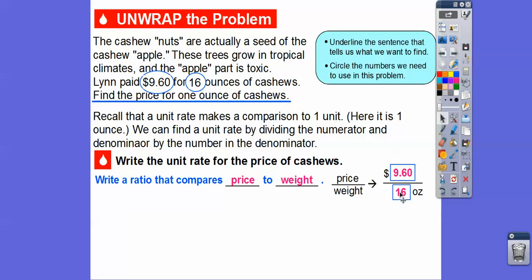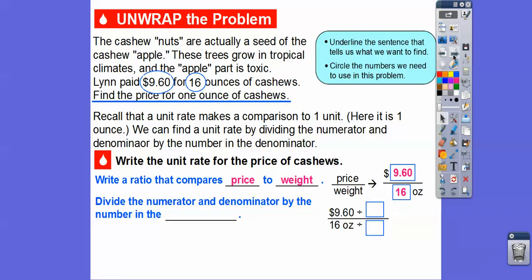Now remember, we want this to be one because we want it to be one unit. By the way, OZ is the abbreviation for ounce. So we'll divide the numerator and denominator by the number that's in the denominator, which is 16. Let's go ahead and divide top and bottom by 16.